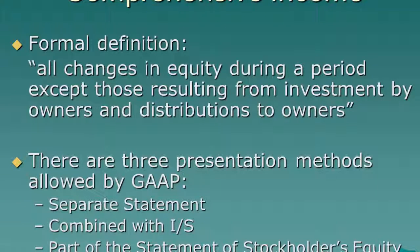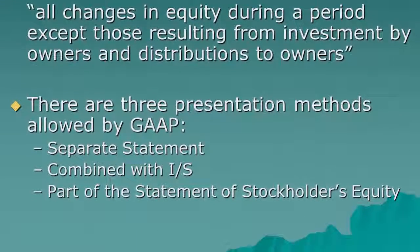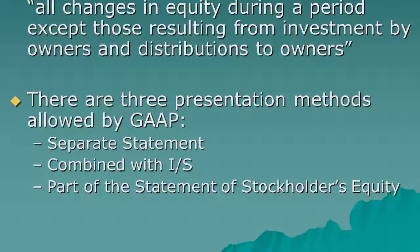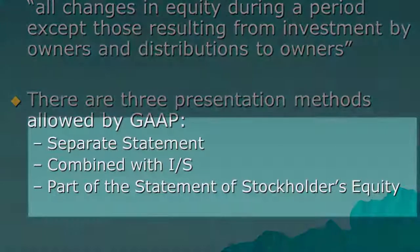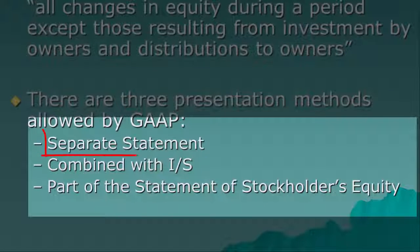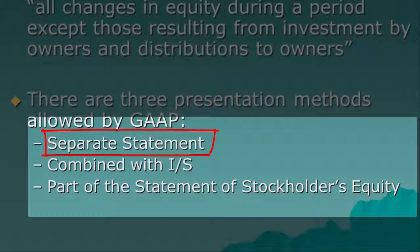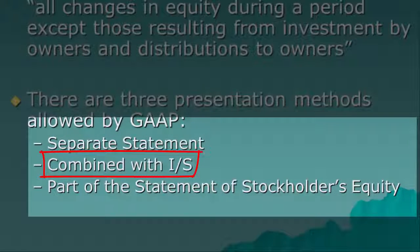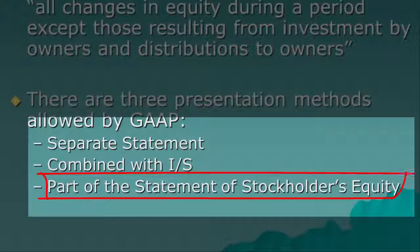FASB really wanted comprehensive income on the income statement, but companies rebelled. So they came up with a compromise — three options under US GAAP. Option one: make a totally separate statement of comprehensive income that starts with net income, adds in the other adjustments, and reports comprehensive income. Option two: stick it at the end of your income statement, adding comprehensive income items below your normal income statement. Option three: put it in a statement of stockholders' equity — not a statement of retained earnings like we made, but a full statement of stockholders' equity. And actually most companies put it there.